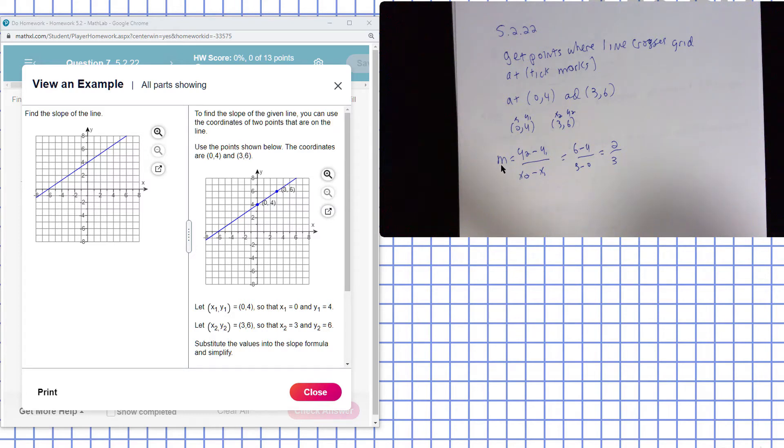I write out my slope formula. Y sub 2 minus Y sub 1 divided by X sub 2 minus X sub 1. Assign values to my variables here, replacing them.